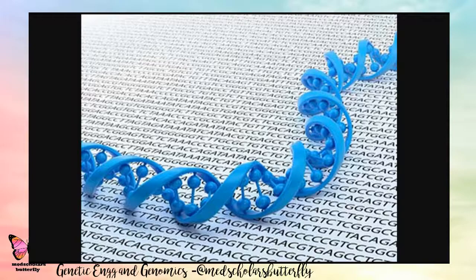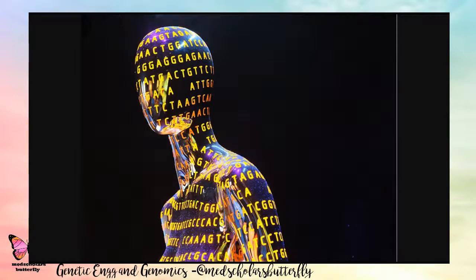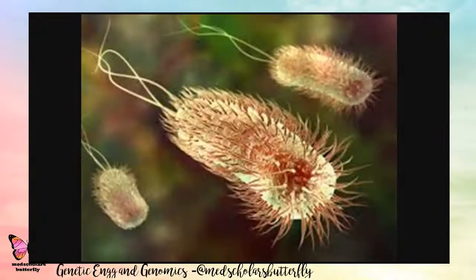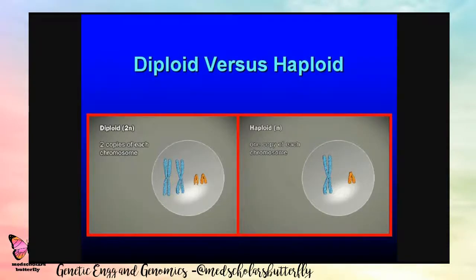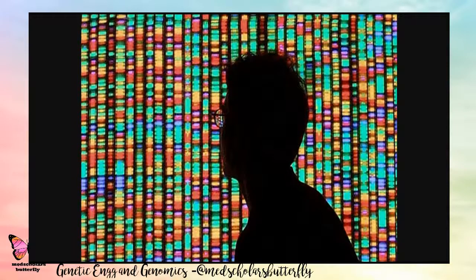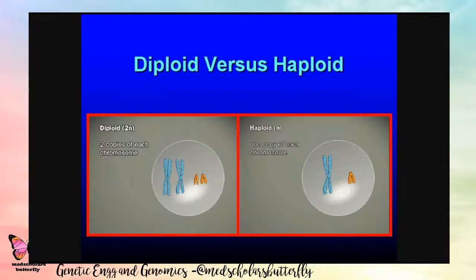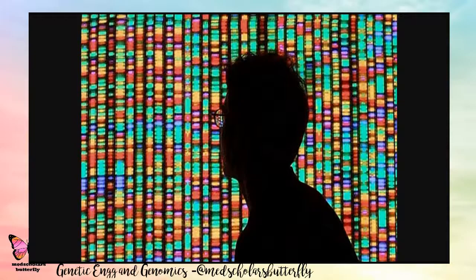Now let us learn about Genomics and the Human Genome Project. The term genome means the collection of all genes present in a cell or a virus. We are all comprised of cells, whether haploid or diploid. Prokaryotes have a single chromosome and only one set of genes, so they are haploid. Since we are eukaryotic organisms, we have two sets of genes, making us diploid. The genome is the total collection of all genes present, and we have two sets of haploid chromosomes.